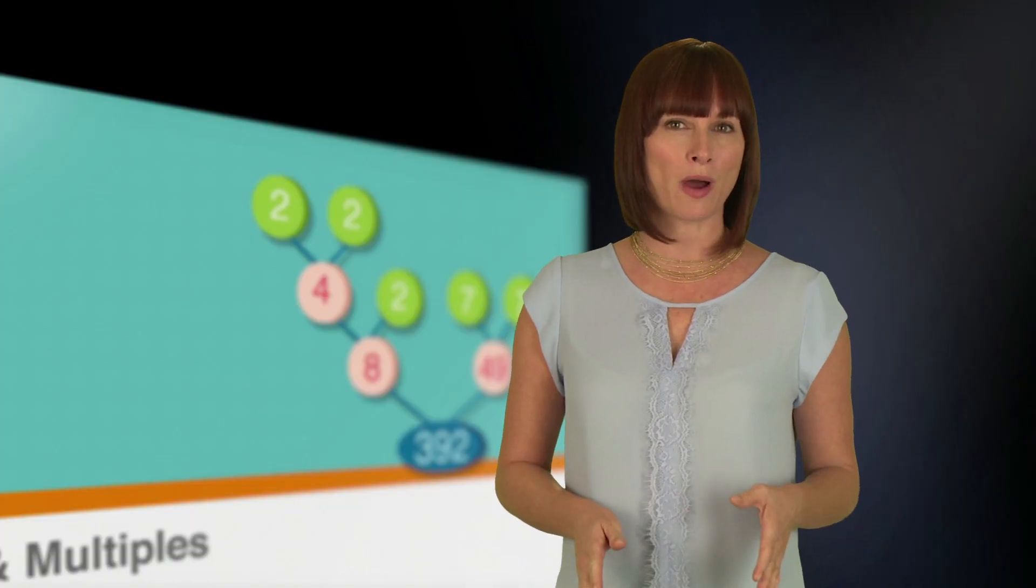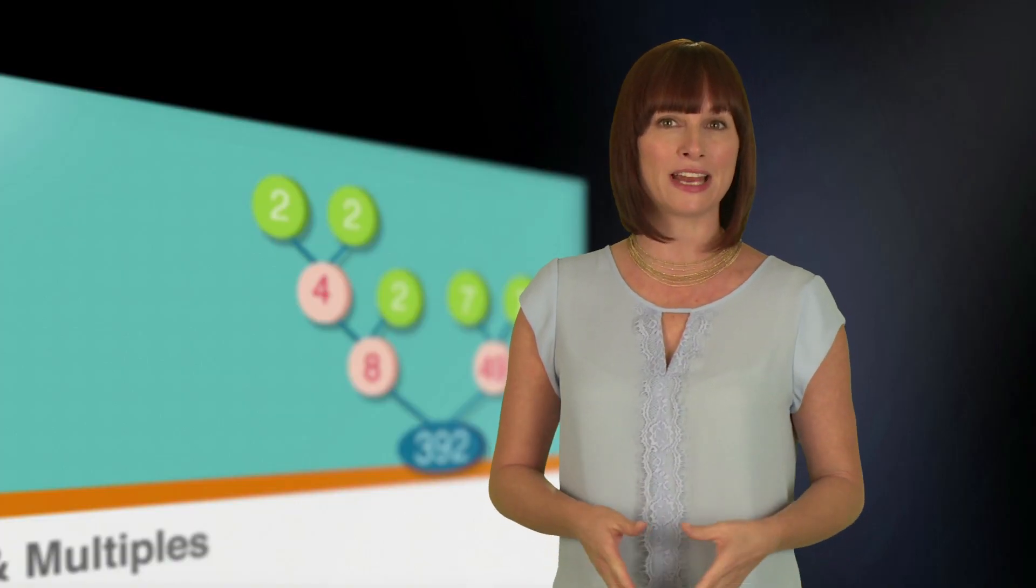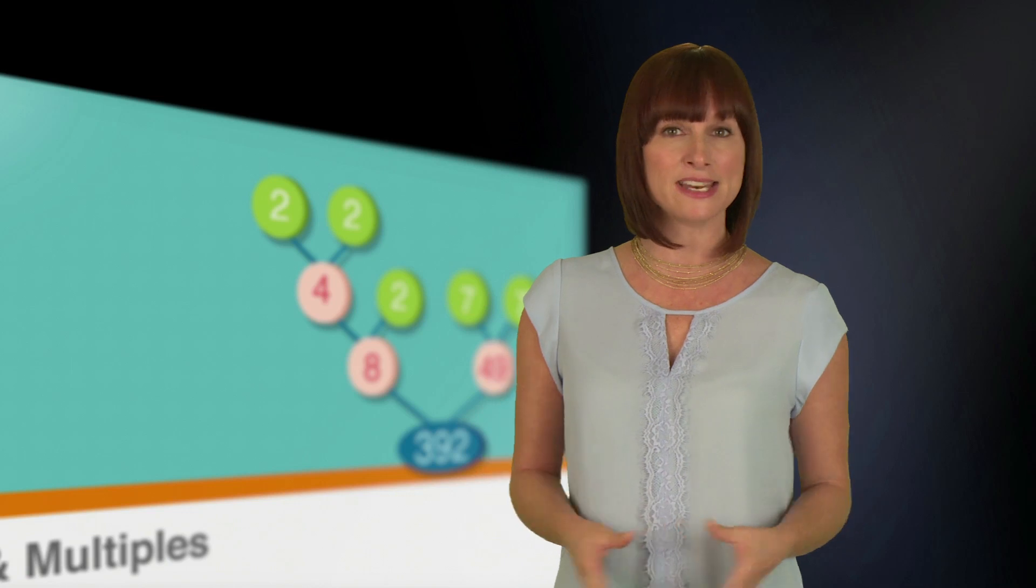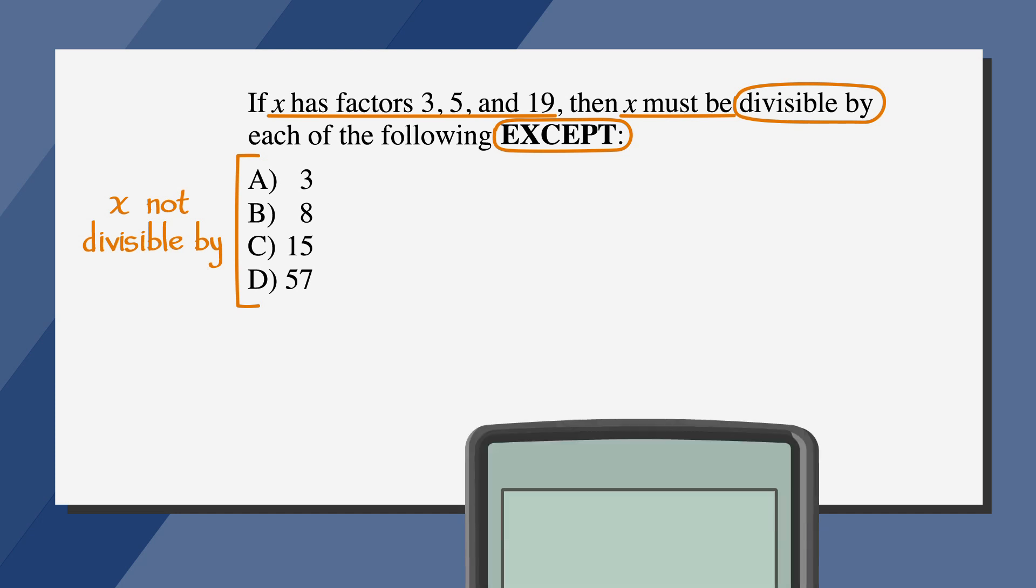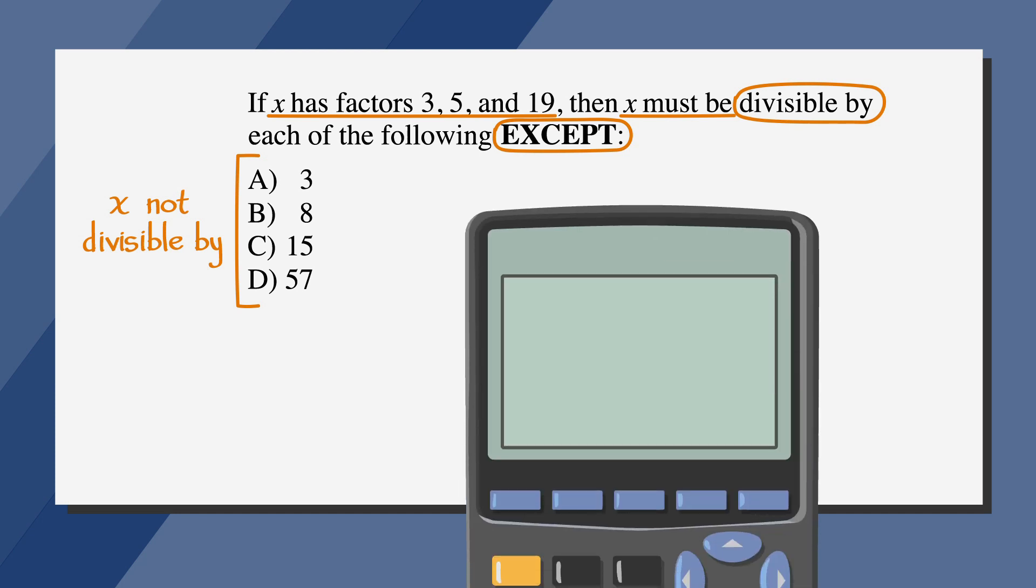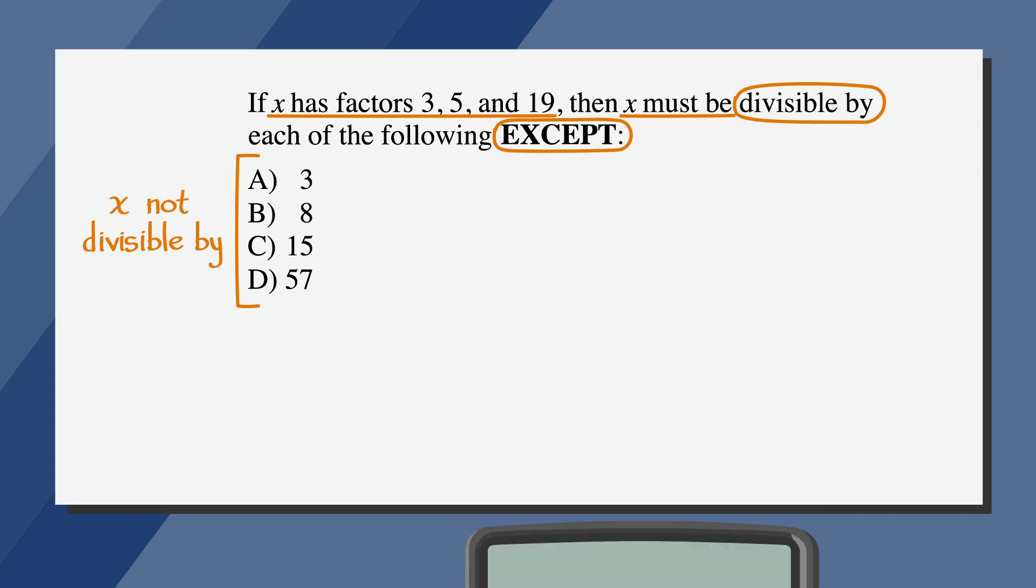So, our number is 285, and we need to find out which of the answer choices it's not divisible by. We want to divide 285 by each of the answer choices. On the calculator section of the SAT, you could use your calculator to easily work through these numbers. But since a question like this could also appear on the no calculator section, we're going to practice our long division.